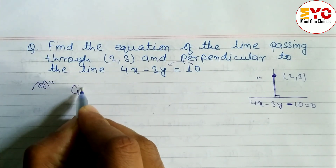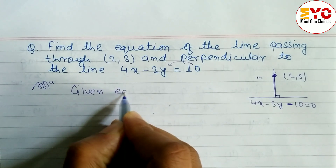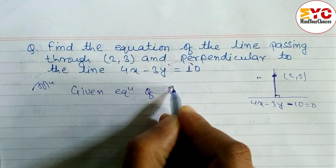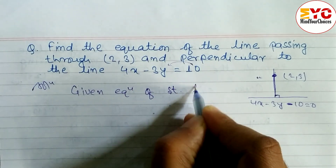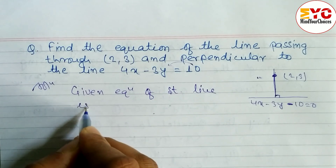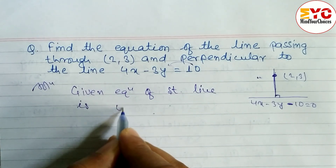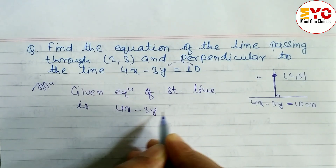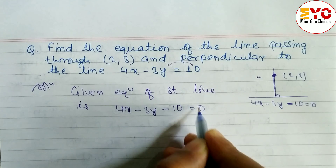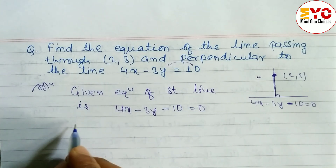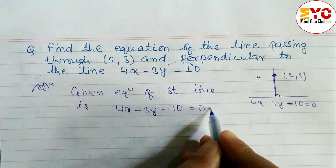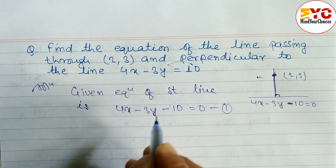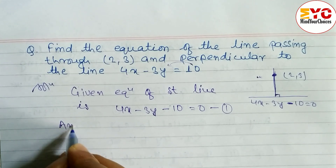Solution. The given equation of a straight line is 4x minus 3y minus 10 is equal to zero — call this equation 1. Any line perpendicular to this line: we have to write it out.